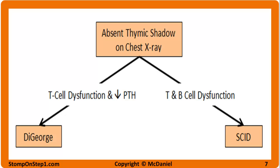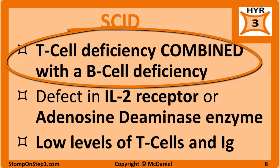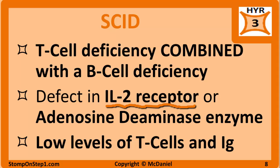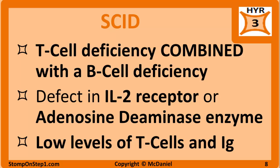You need to rule out severe combined immunodeficiency because it also shows absence of the thymic shadow and a T cell deficiency. What differentiates them is that in DeGeorge you have low parathyroid hormone and related symptoms, while in severe combined immunodeficiency you have a B cell deficiency as well. SCID is a T cell deficiency combined with a B cell deficiency, caused by a defect in the IL-2 receptor or dysfunction of the adenosine deaminase enzyme, which when defective causes adenosine to build up and become toxic to both B and T cells.